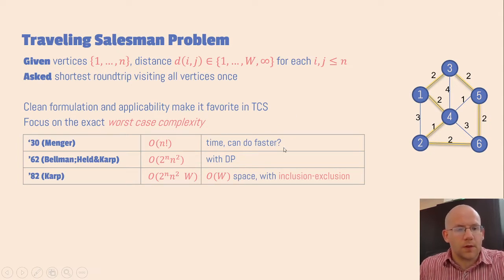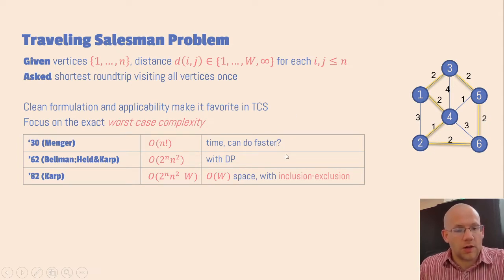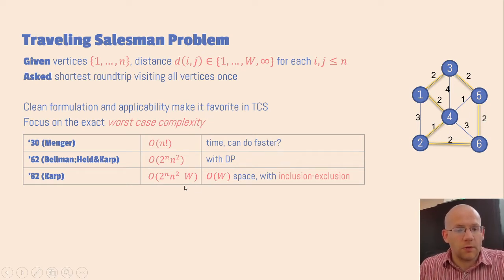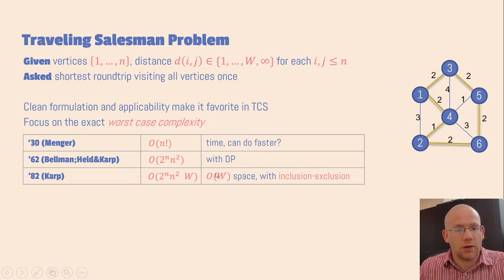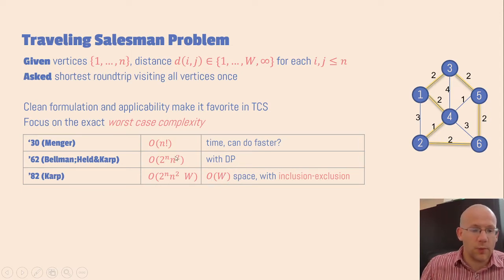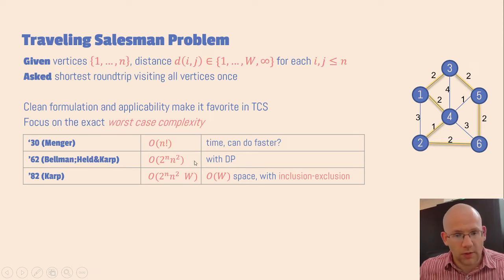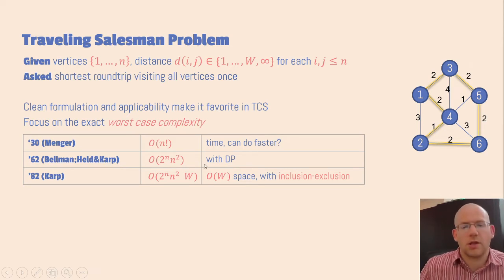This dynamic programming algorithm is now a household algorithm in many undergraduate algorithms classes. 20 years later, Karp gave a 2 to the power n-squared times capital W algorithm. This algorithm is a bit slower because of this factor W, but it can use quite a bit less space — the space usage is only order W, whereas the dynamic programming algorithm uses space as large as 2 to the n.